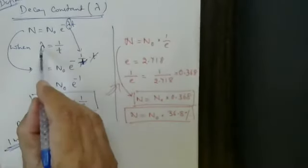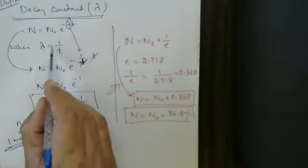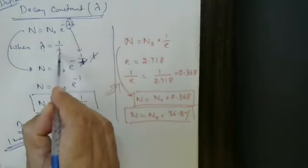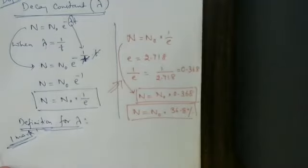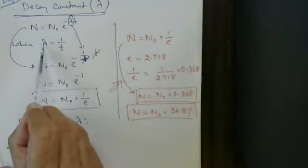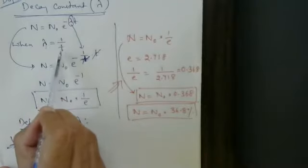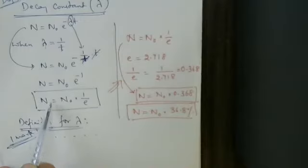The decay constant is equal to the reciprocal of the time interval during which the number of atoms reduces to 1/e times the initially present number of atoms. Decay constant of a radioactive substance: it is equal to the reciprocal of the time interval; during that time interval, the number of atoms reduces to 1/e times the initially present number of atoms.